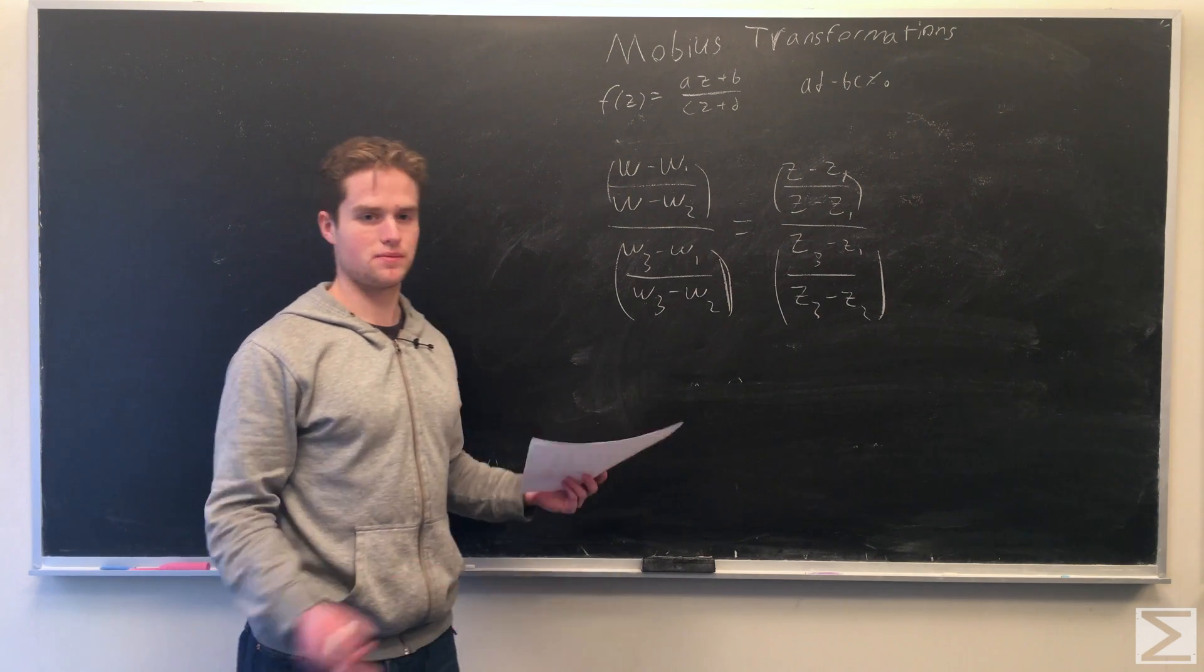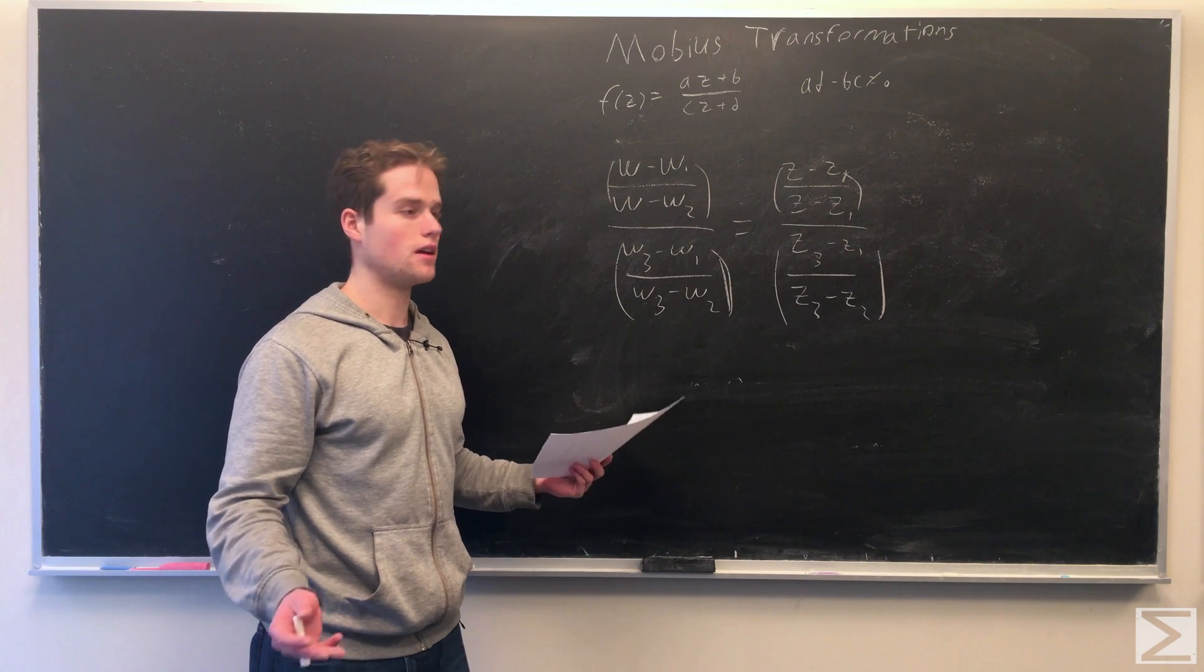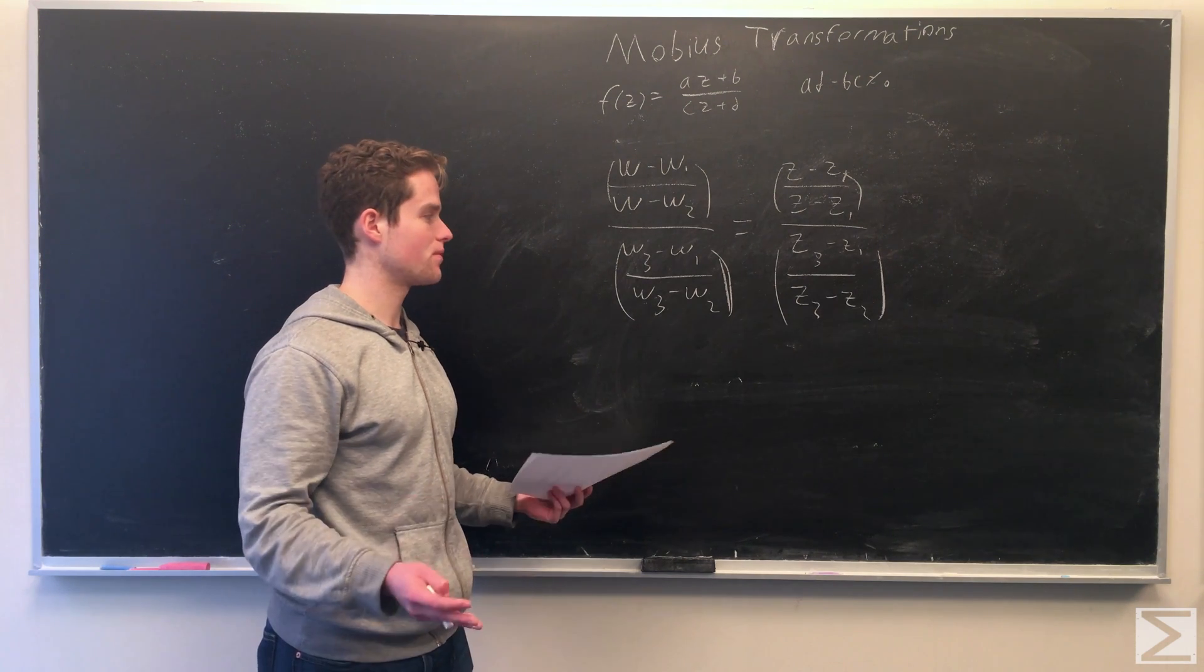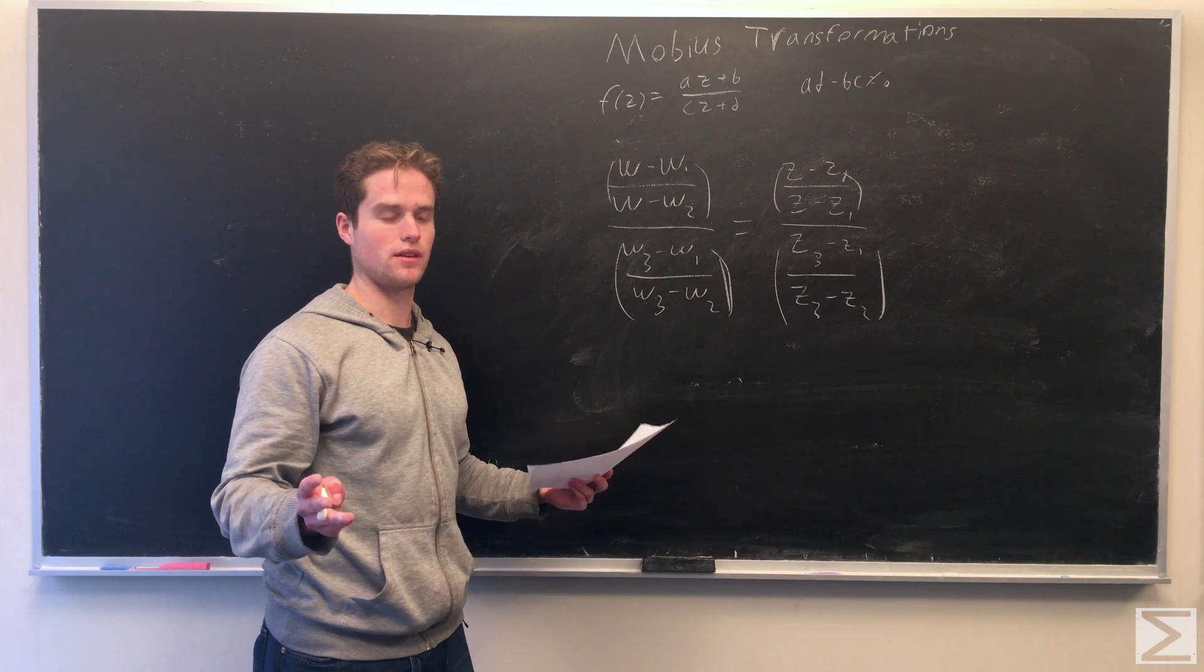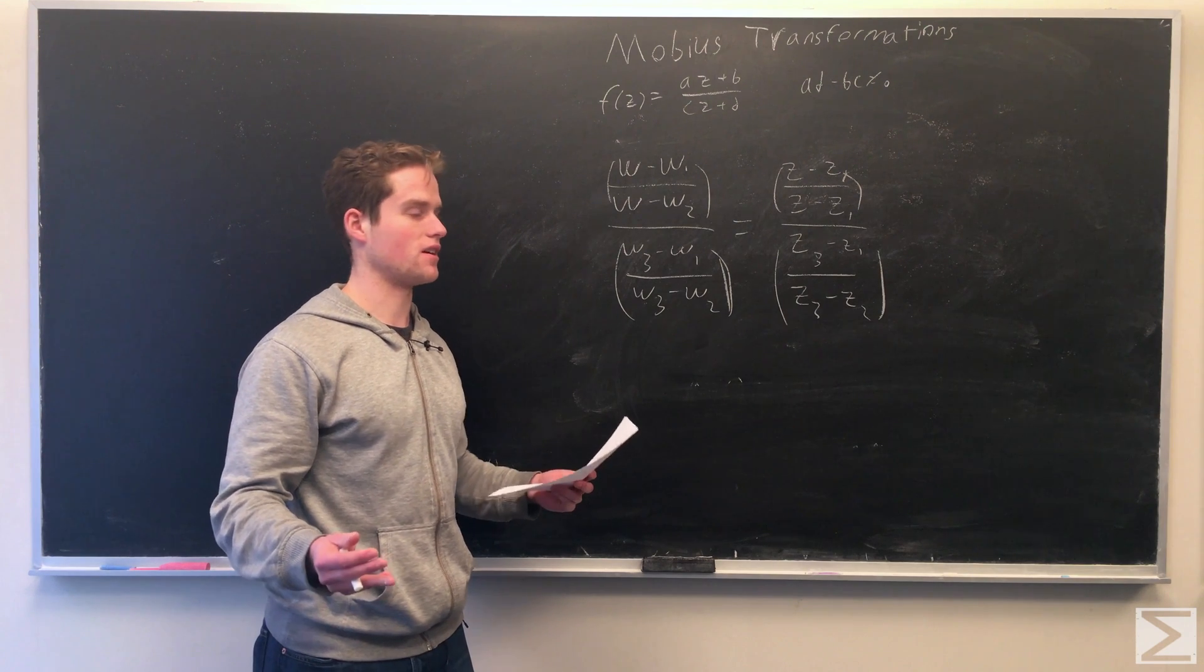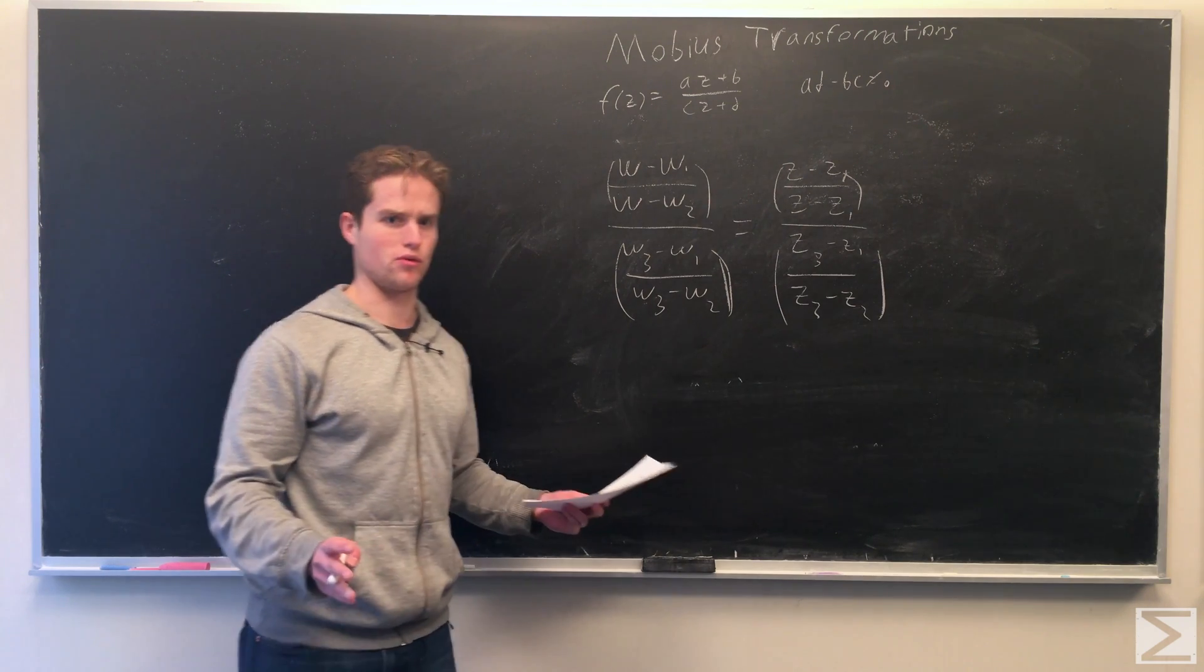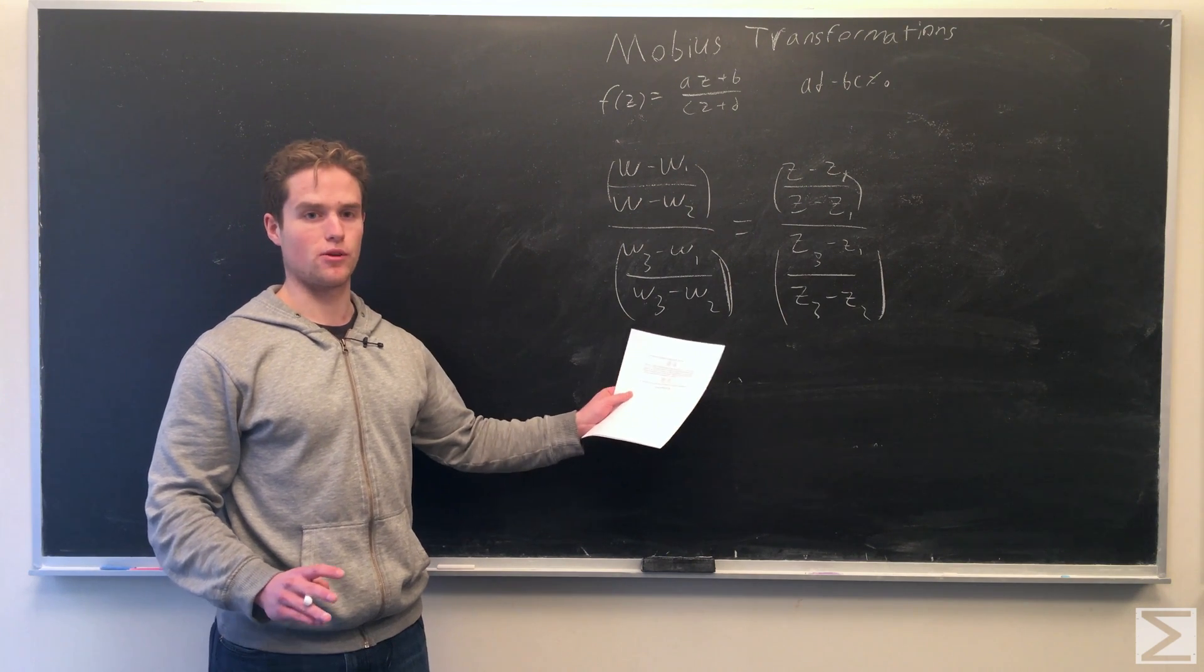You can do this by noting that any Mobius transformation with more than two fixed points is the transformation w of z equals z. And note that if you have two Mobius transformations, the inverse of one with the other one will give you something with more than three fixed points, and so is the constant transformation w of z equals z transformation. And so they would have to be identical. We won't go through the details here.